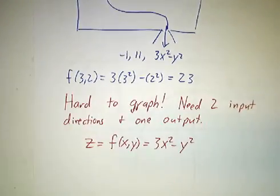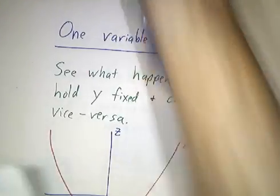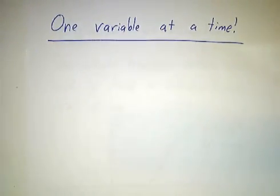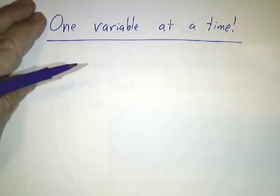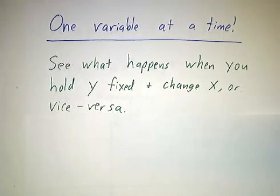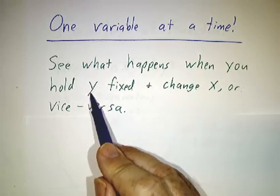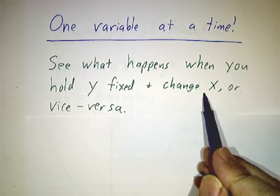Instead, what we're going to do is we're going to follow the last pillar of calculus, one variable at a time, the sixth pillar. To understand what happens to a function of two variables, hold one of the variables fixed. You hold y fixed and see what happens when you change x.